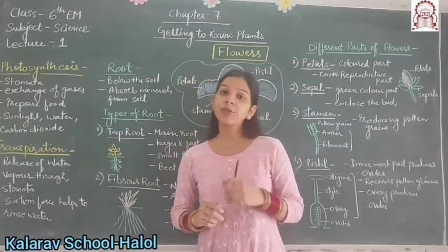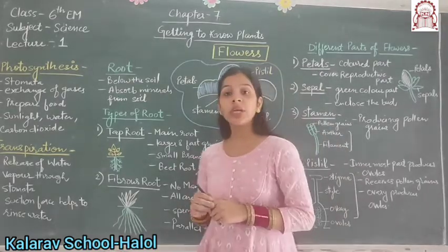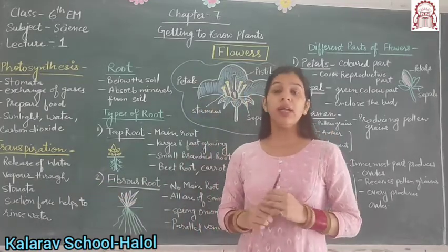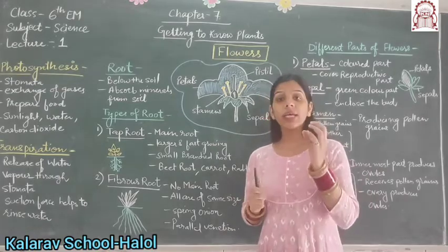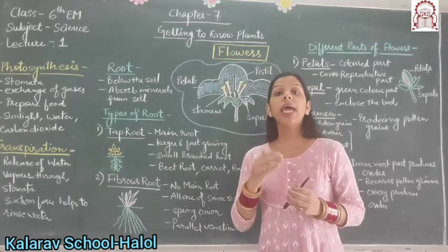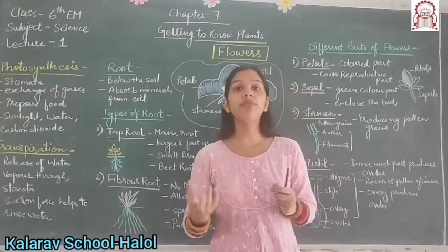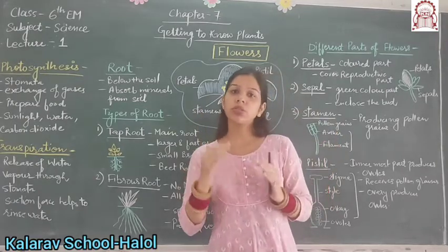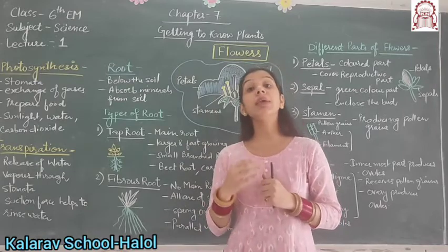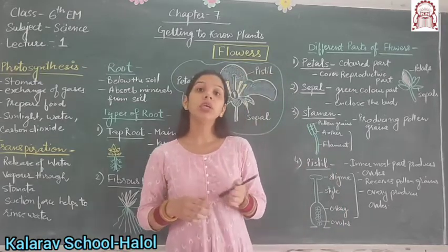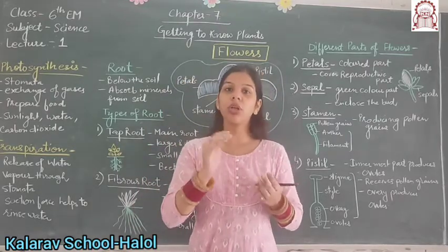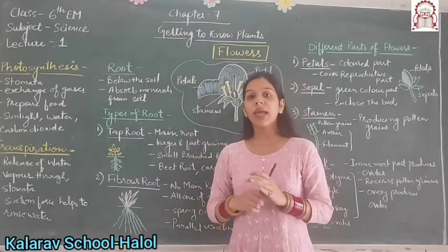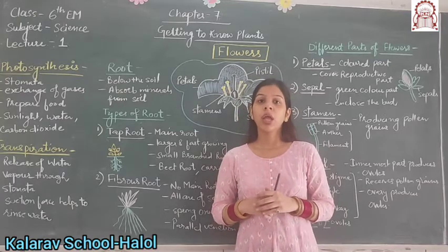The next term is transpiration. Transpiration is the process during which release of water vapor through stomata, that is the surface of leaves, takes place. A suction force is developed which helps to draw water from roots to stem, and the stem helps to divert this water to other parts of the plant. Transpiration can be easily seen by yourself. In the morning, you may have seen small droplets of water on the leaves. These small droplets released from the surface of leaves are due to the process of transpiration.